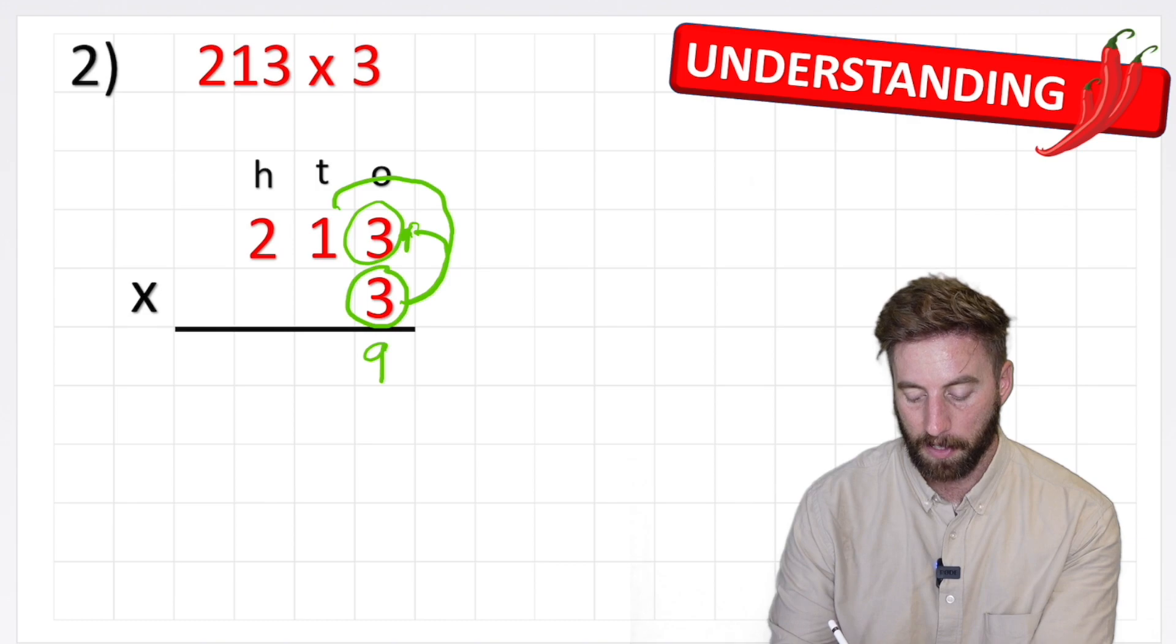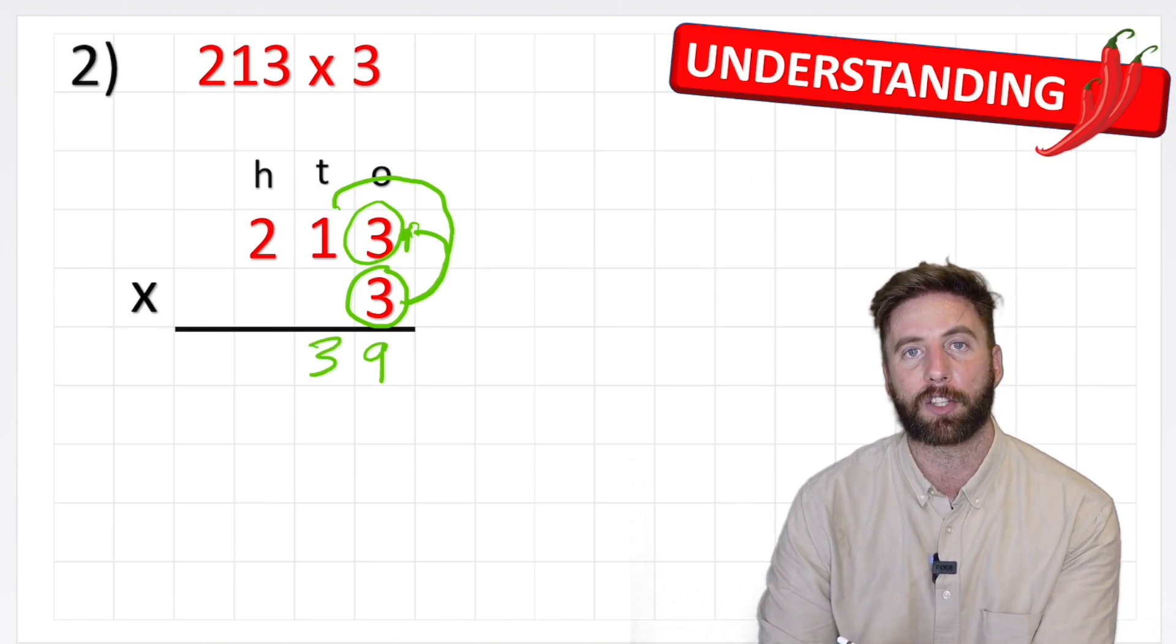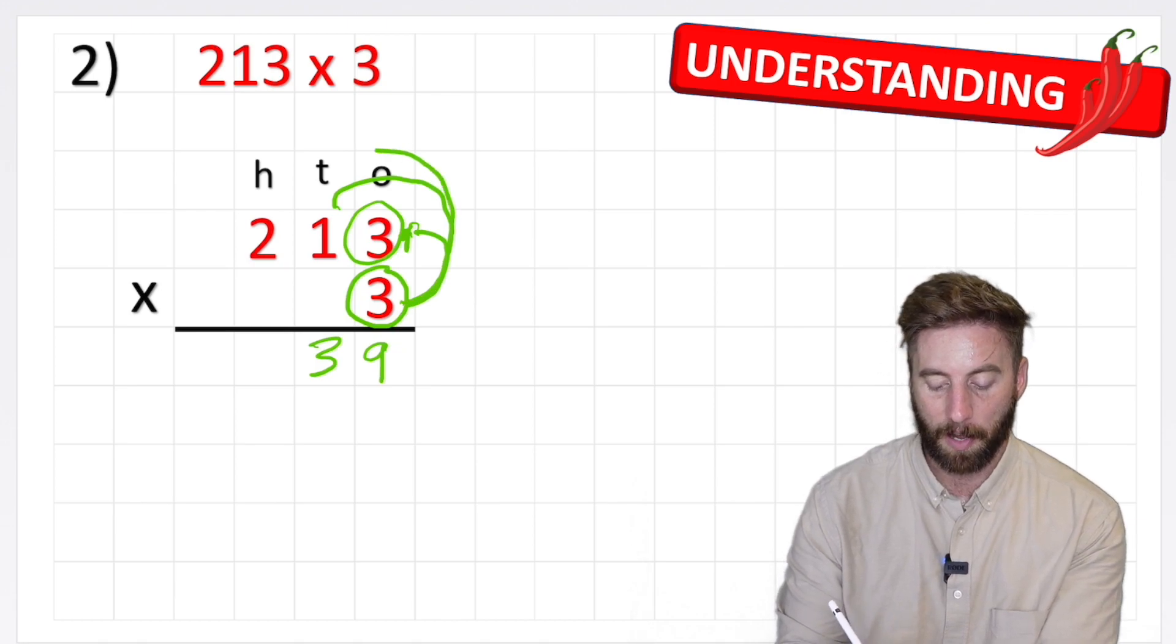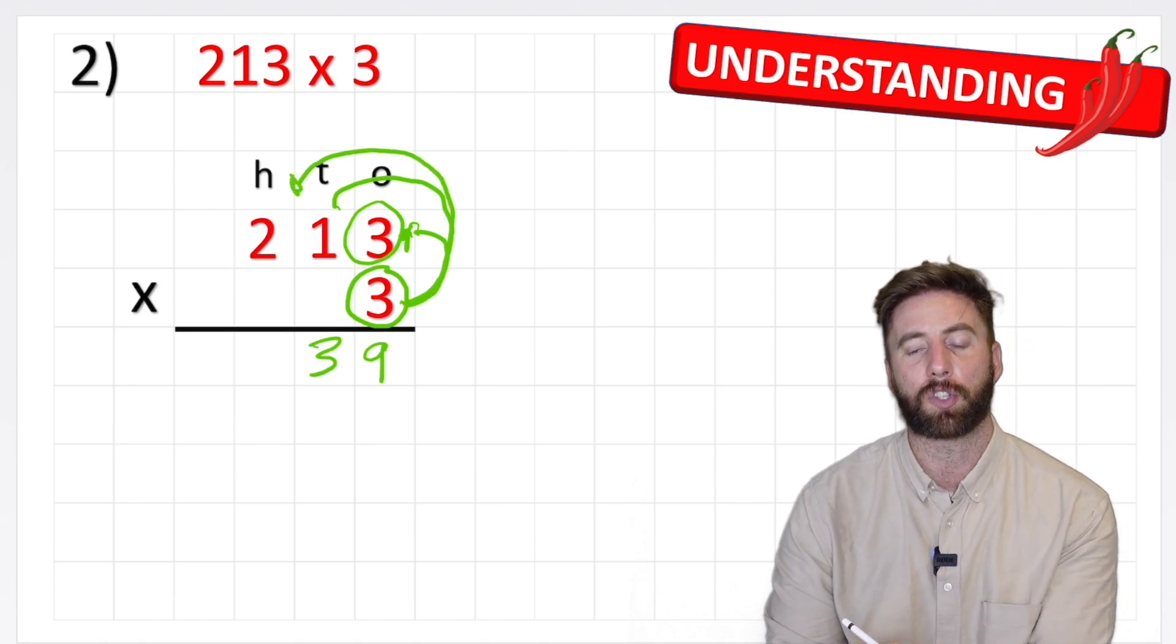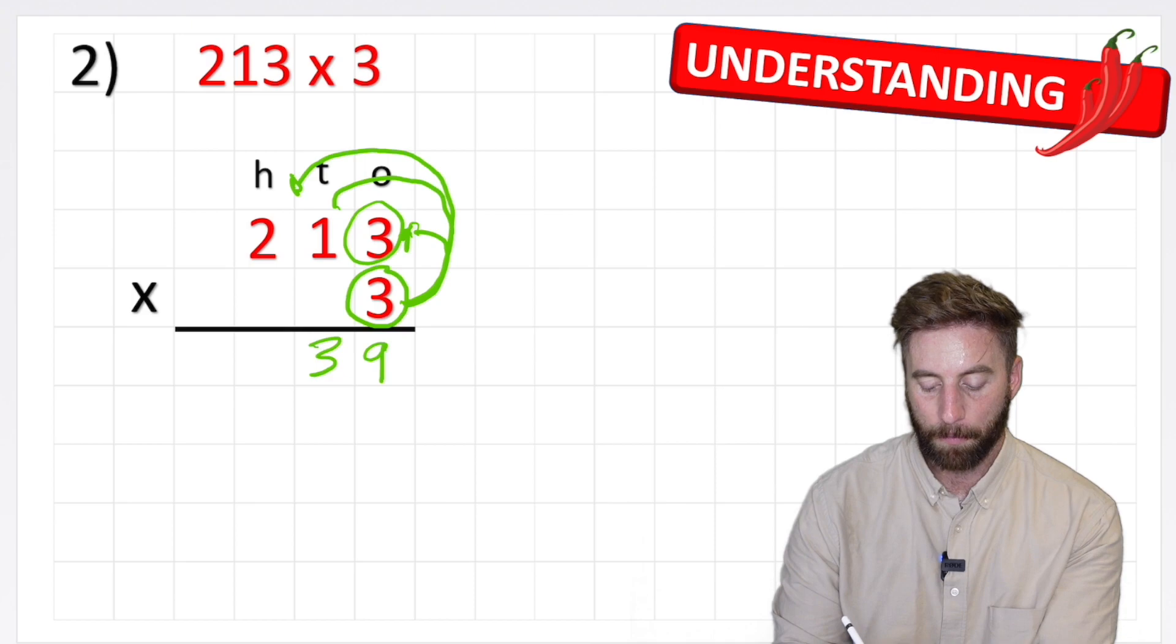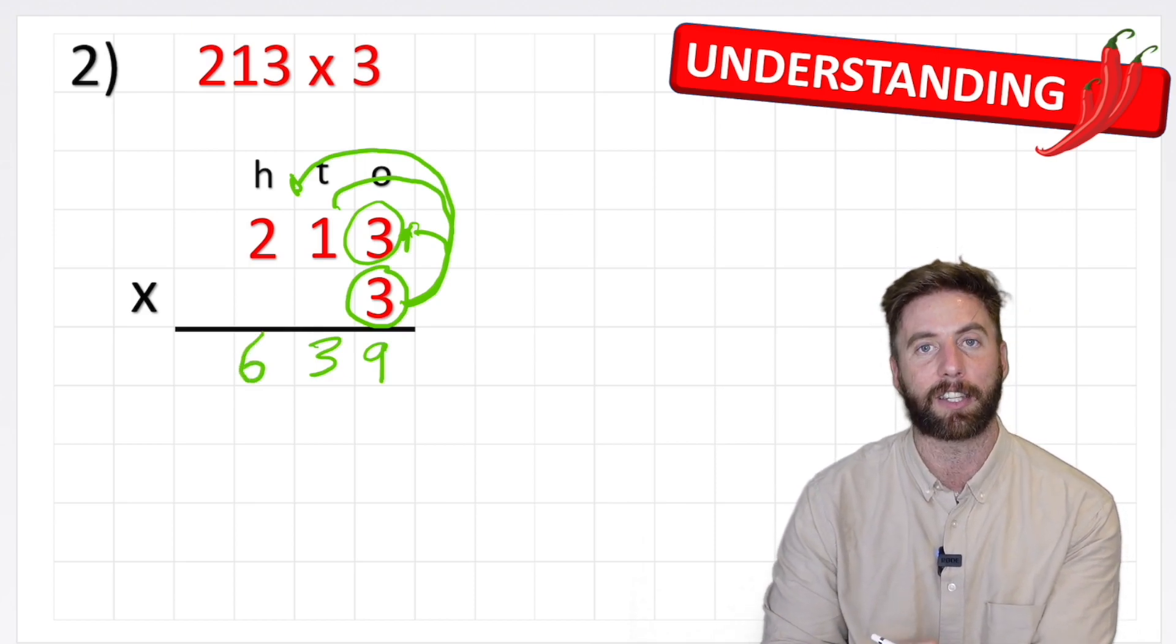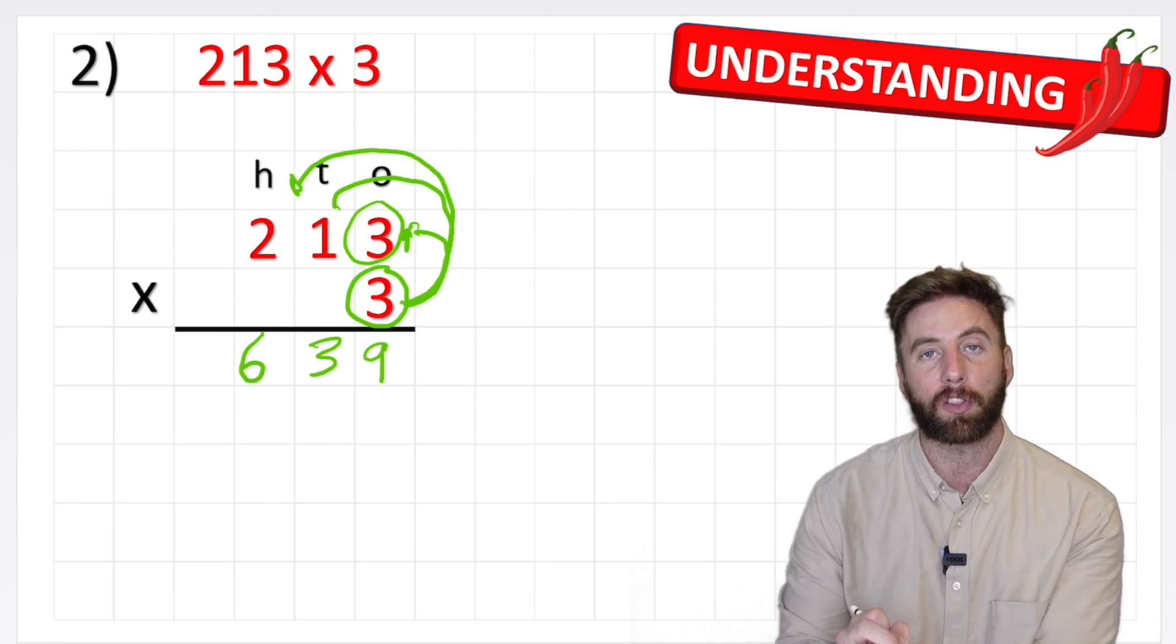Now I'm multiplying 3 times 1, but remember it's actually a 10. So 3 times 1 is 3, and by putting it in the tens column it makes it that 30. Now lastly I can do 3 times 2, and 3 times 2 is 6. But remember it's actually 3 times 200, and I can get the answer 600 by putting my 6 in the hundreds column. So my answer to 313 times 3 is 639. Give myself a tick. Awesome.